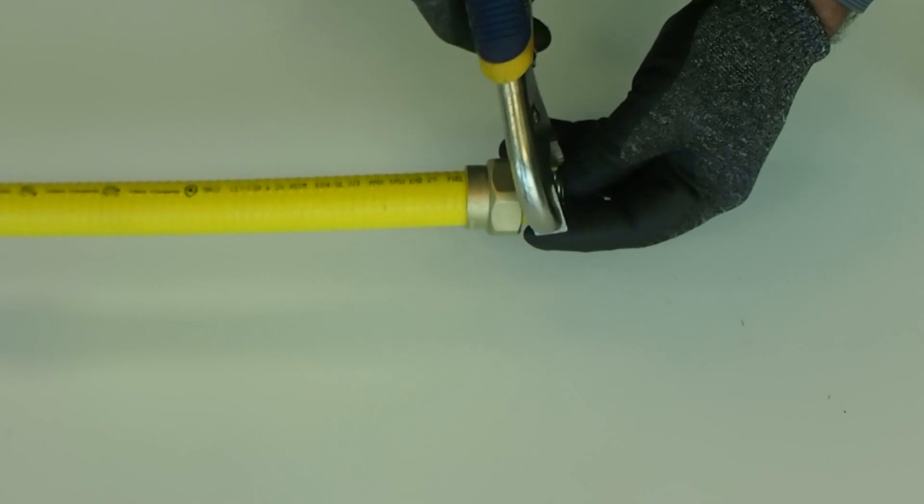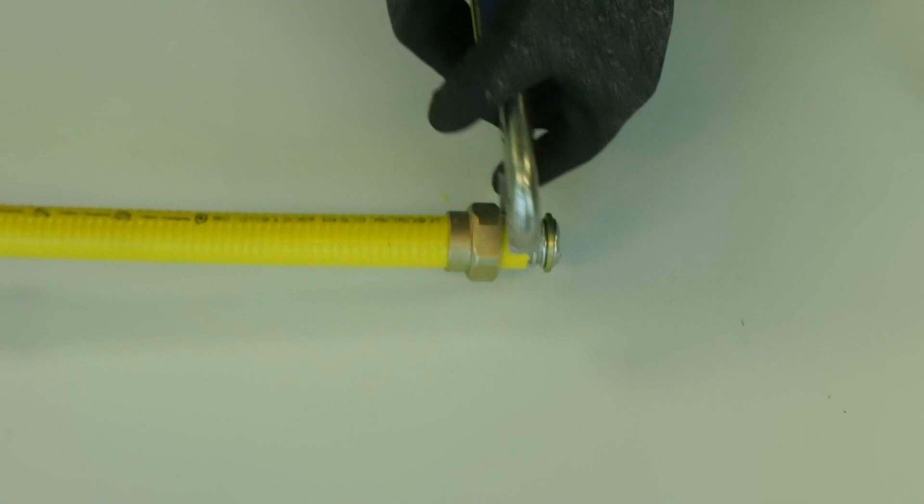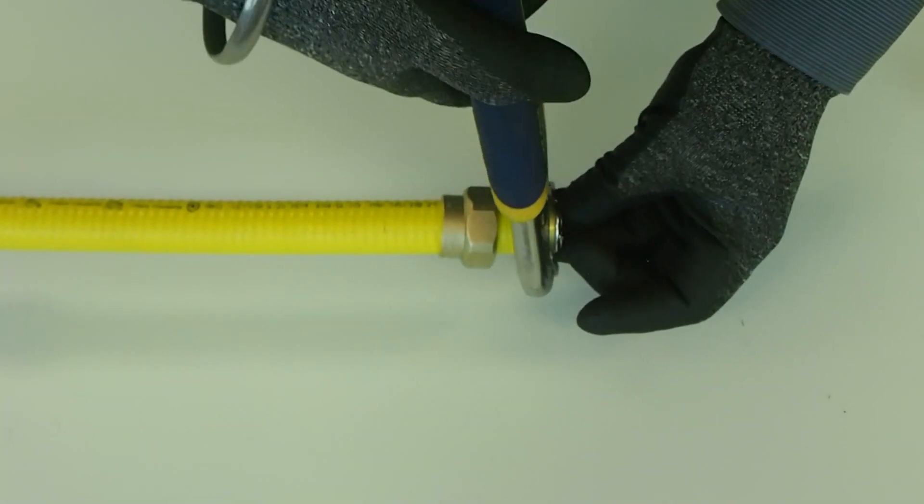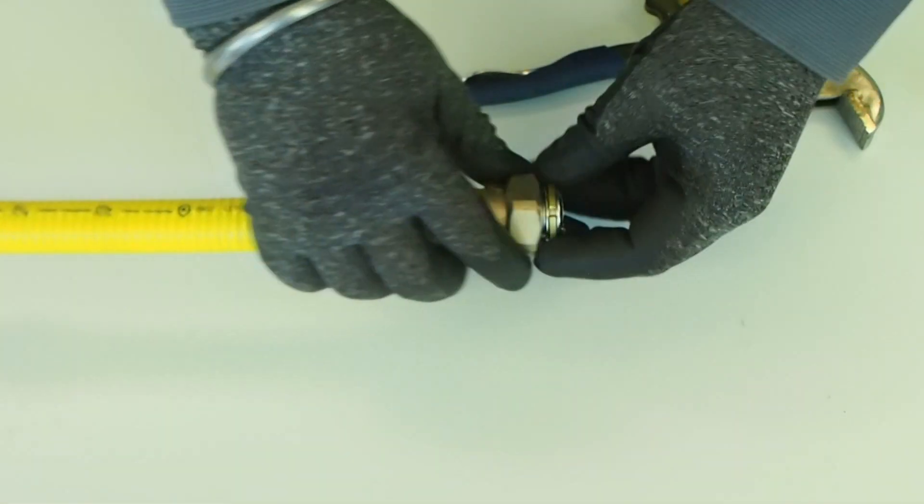Place the retainer ring in the first valley of the tubing. Being careful not to dent the tubing, clamp the ring in place by applying gentle pressure 360 degrees around the ring. It should fit tightly and not easily spin around the tubing.